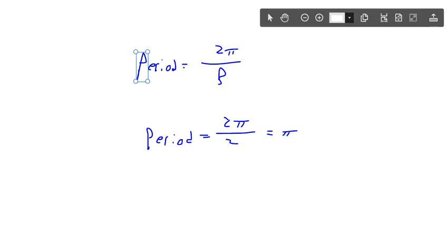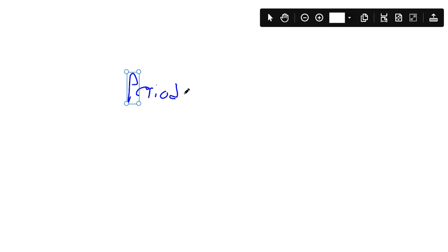Now the 2 on the outside, I actually got it here from a previous video, but the period for cosecant is 2 pi divided by b.